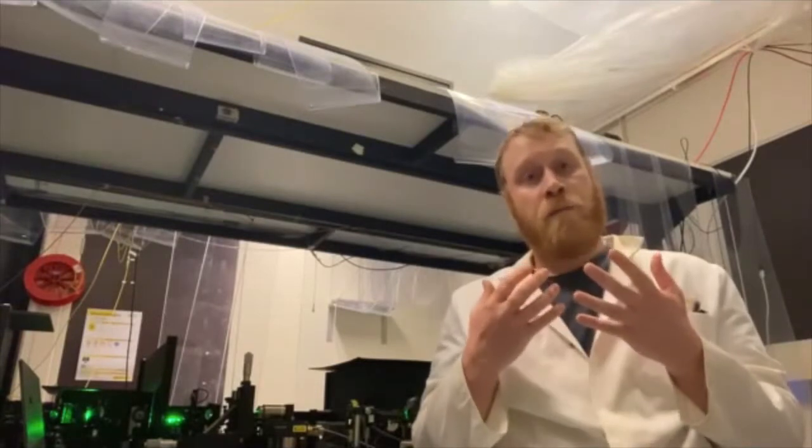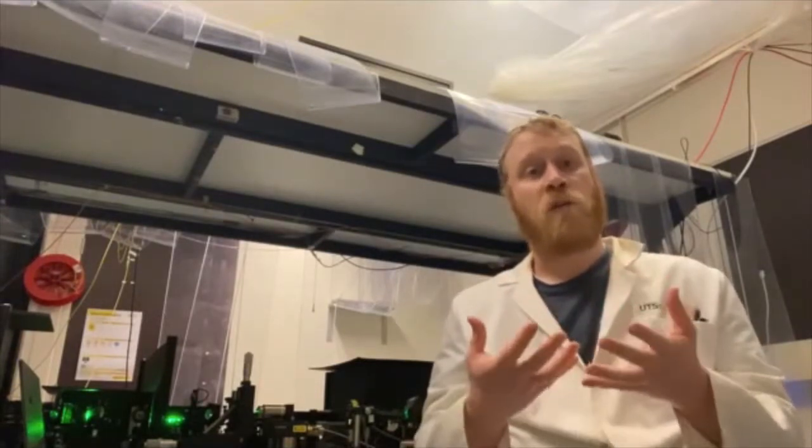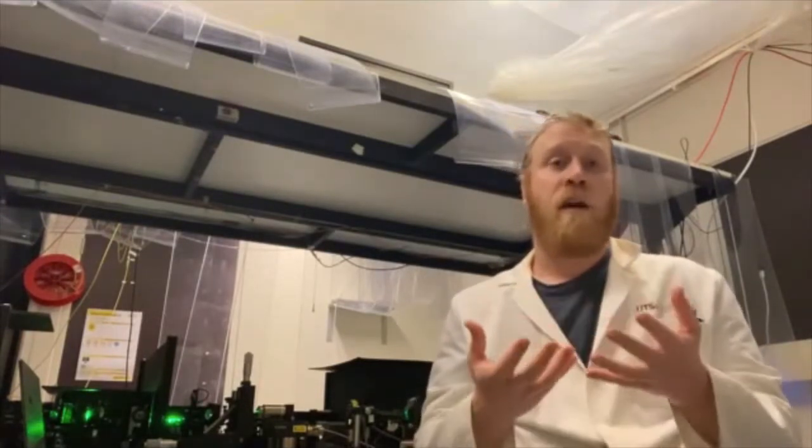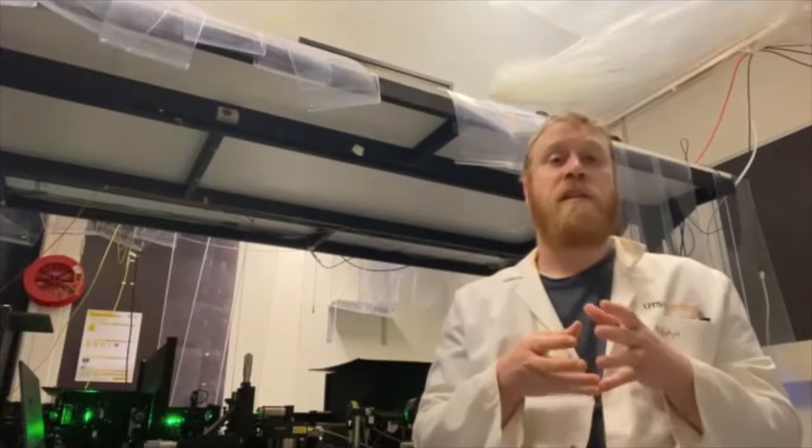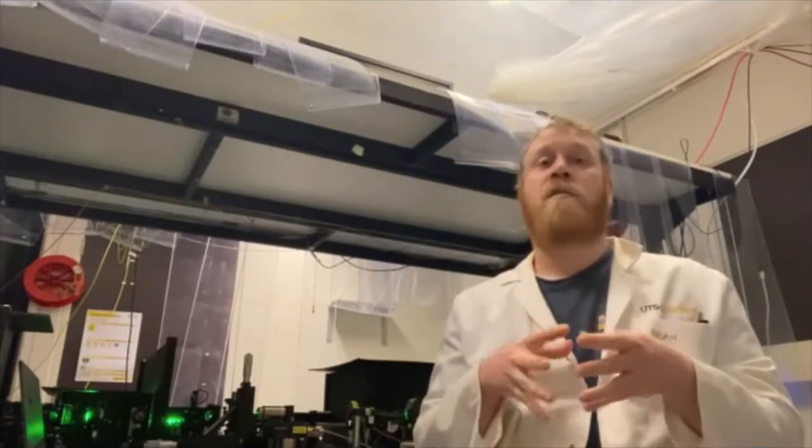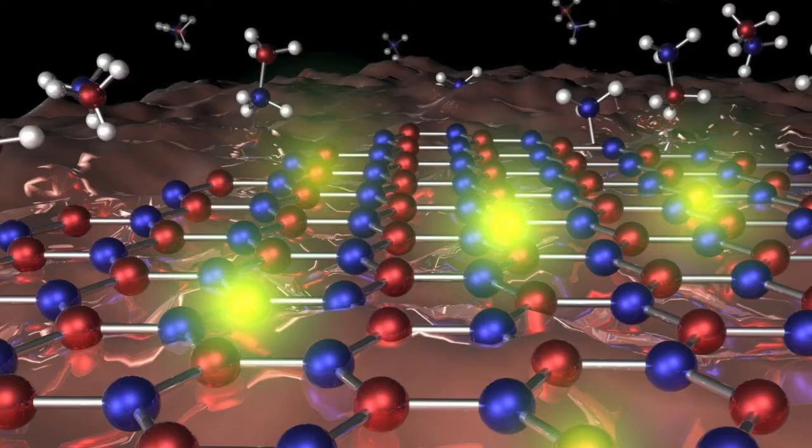One of the systems which our group works with a lot is called white graphene or hexagonal boron nitride. Now this is a two-dimensional material, and defects within this material are crystal imperfections such as a missing atom or an impurity introduced into the lattice, can act as a source of single photons.